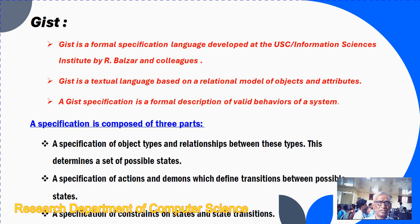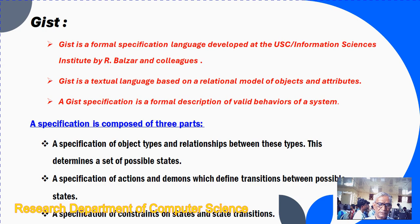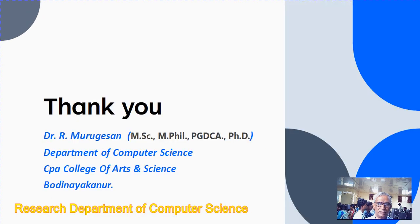The last language is GIST, developed by the U.S. Information Science Institute by R.V. Balser and colleagues. It is a textual language based on a relational model of objects and attributes. The requirement specification is a behavioral description of the system. It consists of three parts: specification of object types and relationships between these types (which determines a set of possible states), a specification of actions and demands which defines transitions between possible states, and a specification of constraints on states and transitions. This is an overall overview of languages and processors for requirement specification in software engineering.